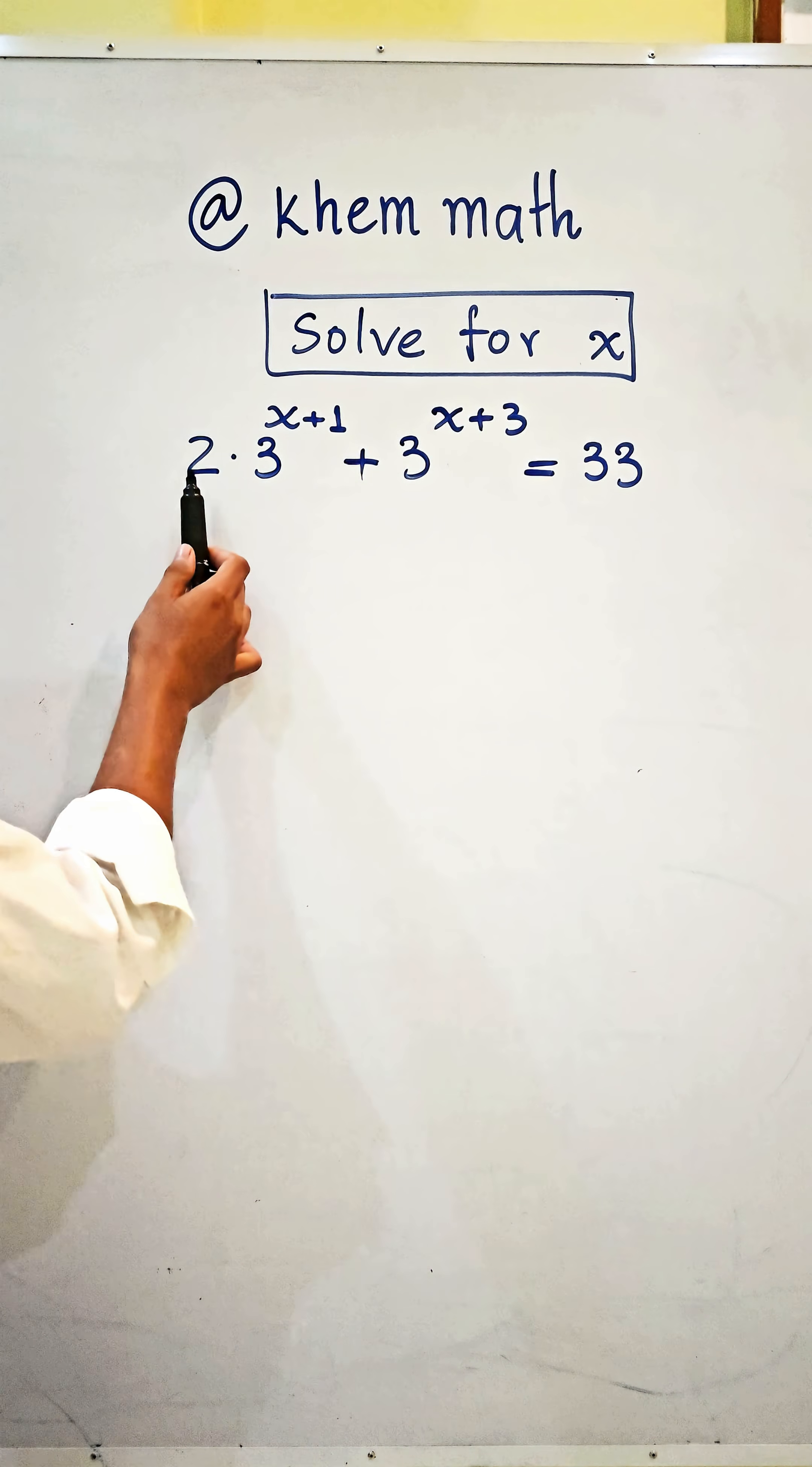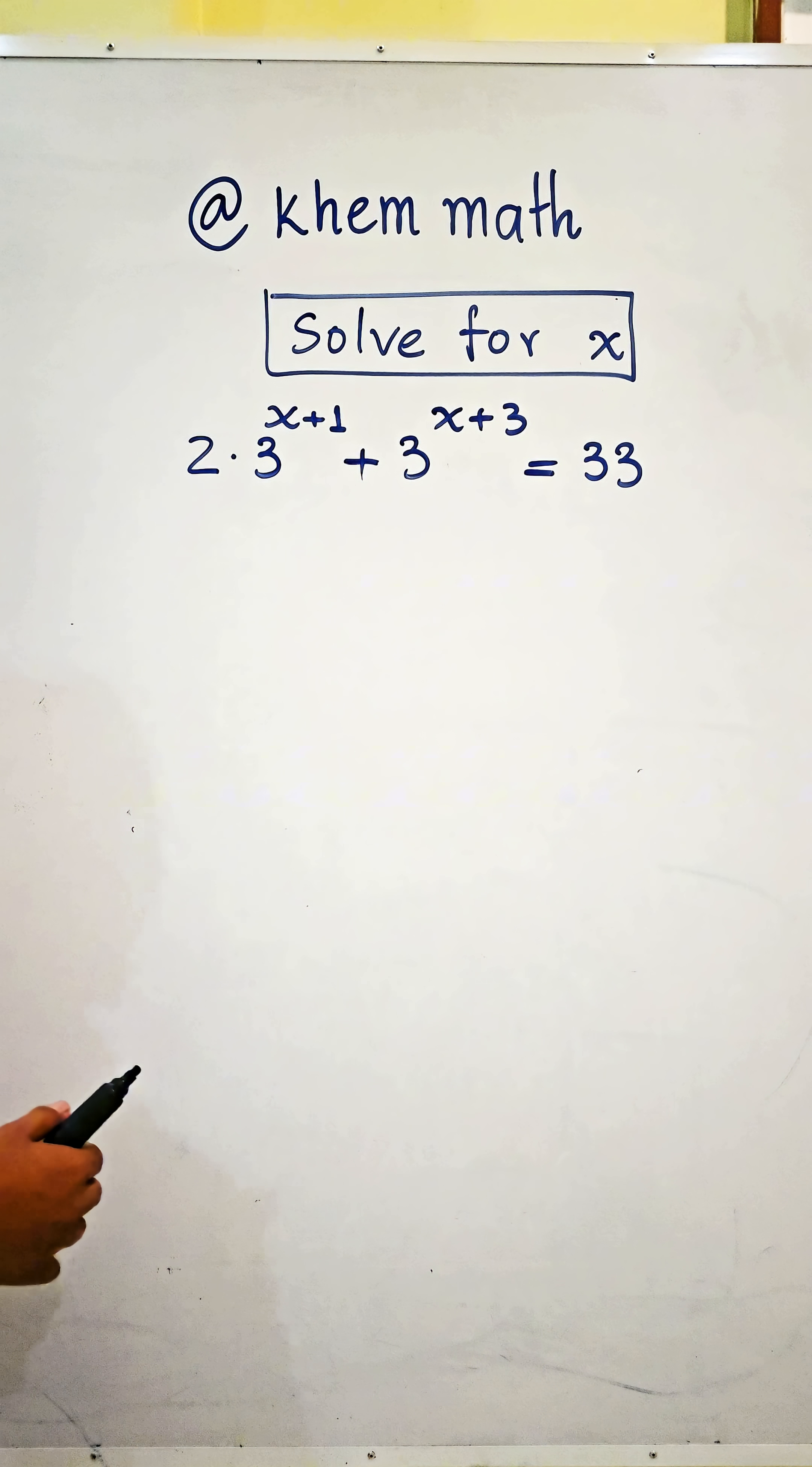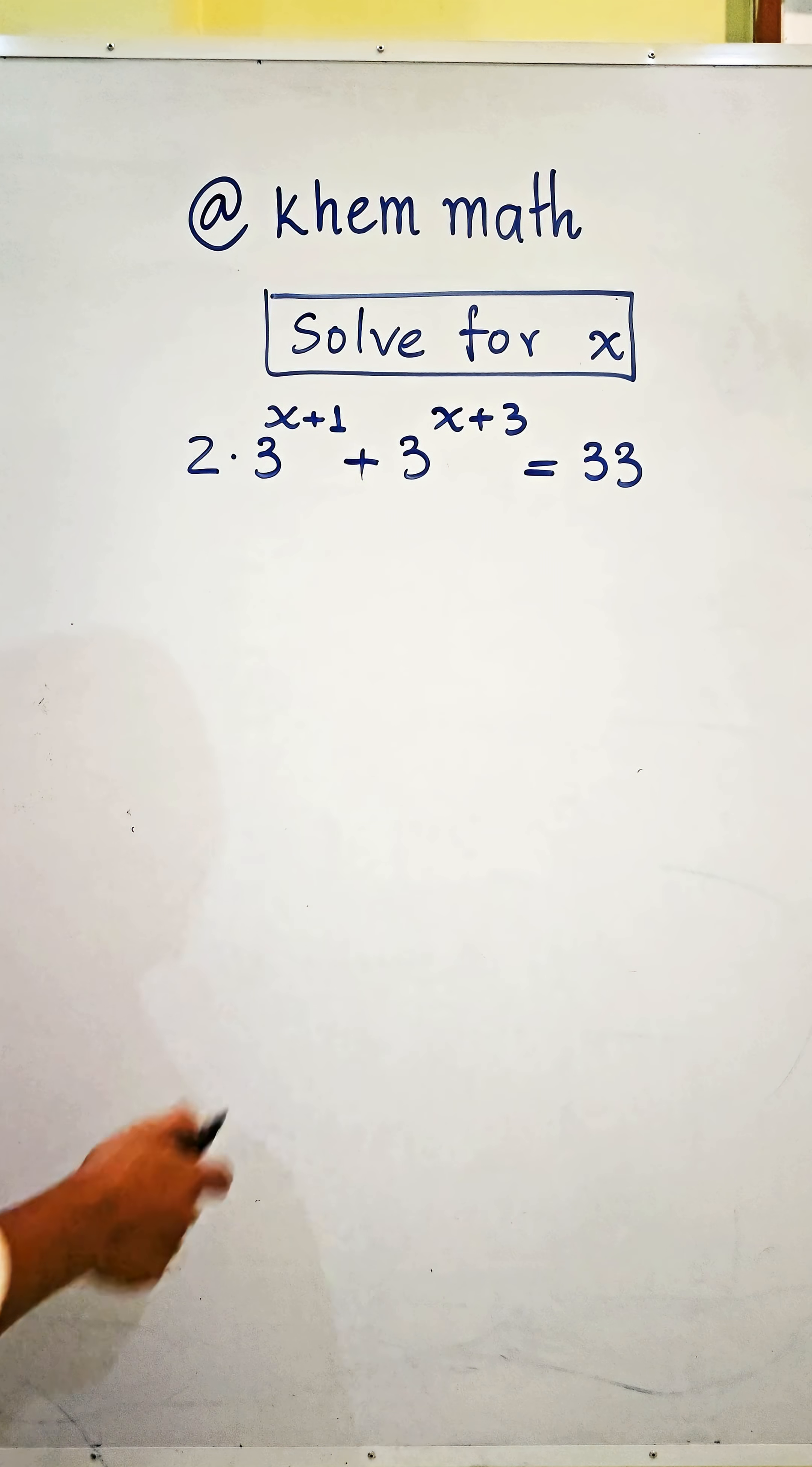To solve for x: 2 times 3 power x plus 1, plus 3 power x plus 3, equals 33. This is an exponential equation which has the same base but different exponents, so here we use the formula.